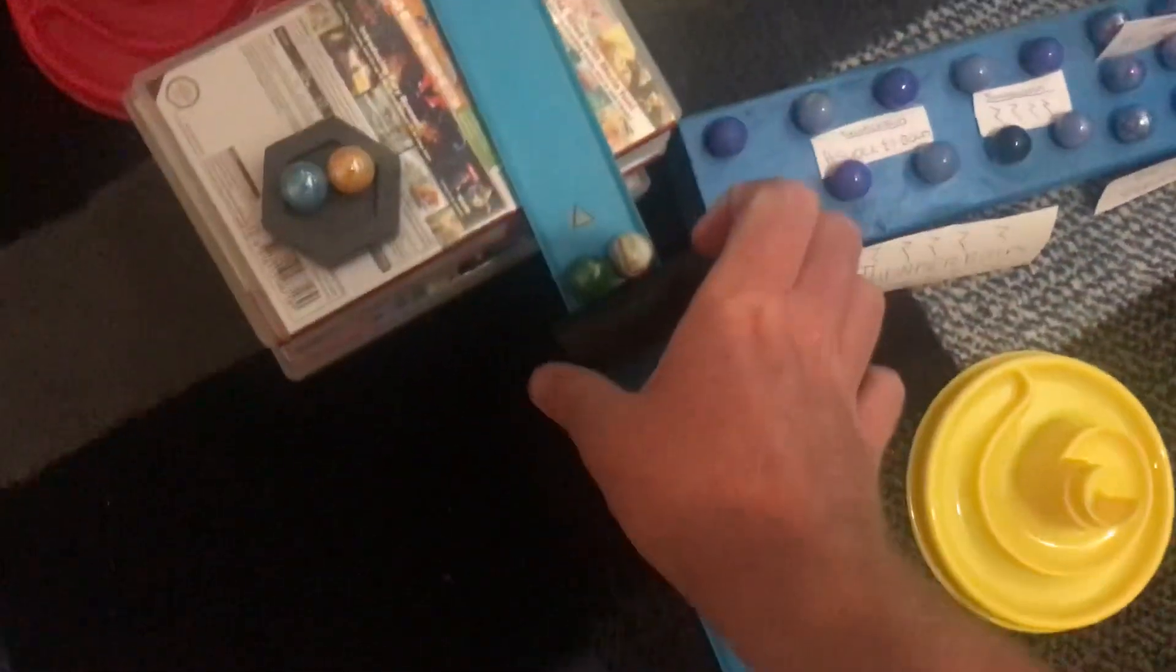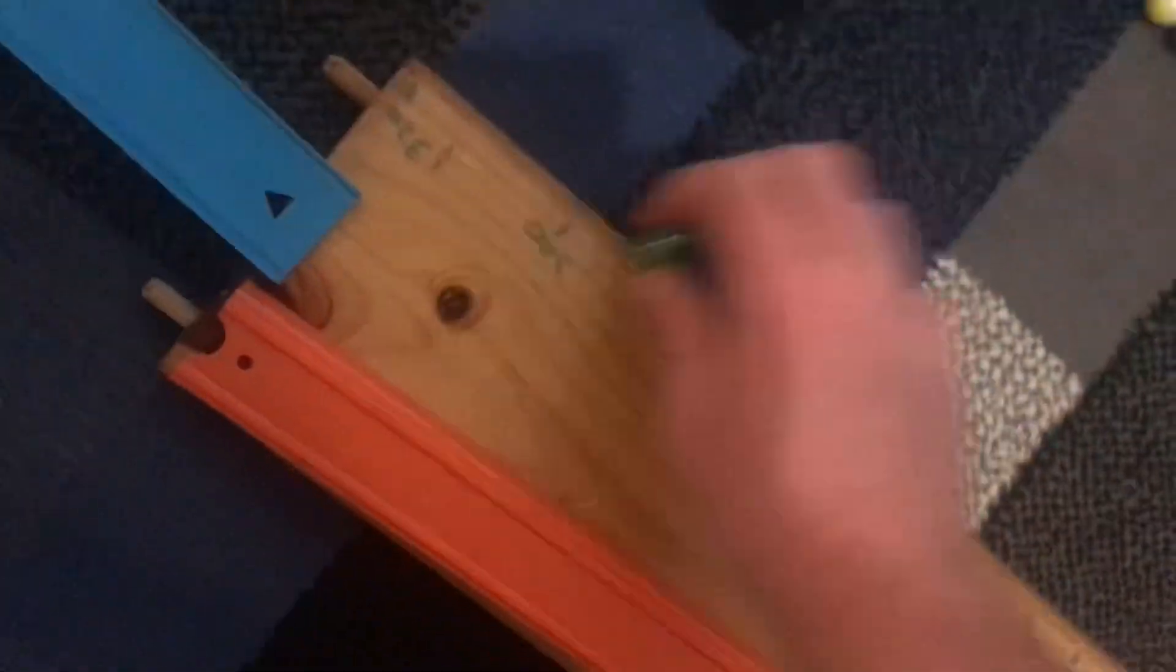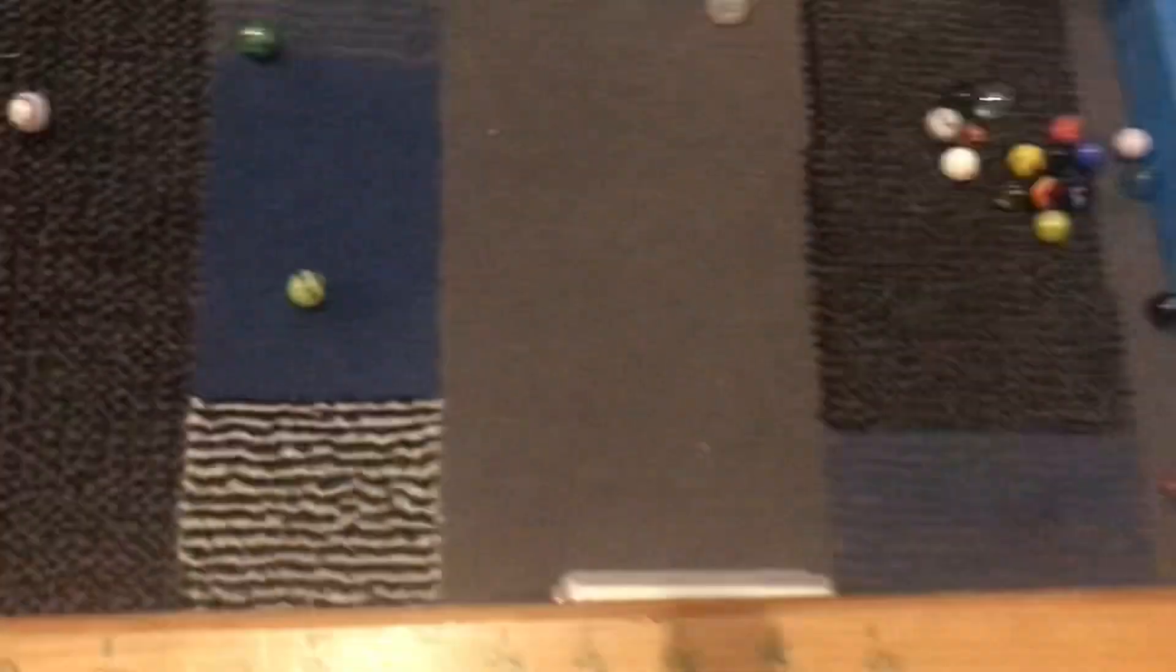And now, who will get the gold medal? Money or Sugar? Who will get it? And that's going to be the Money Balls. The Money Balls have won gold in the wooden drag.